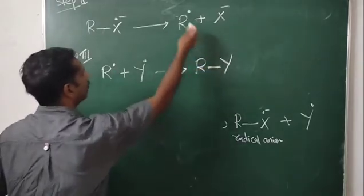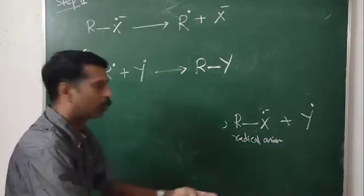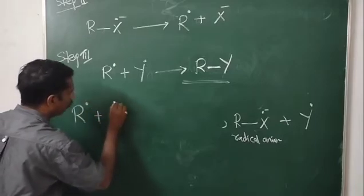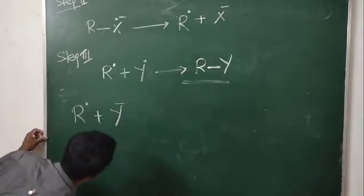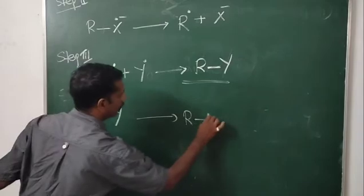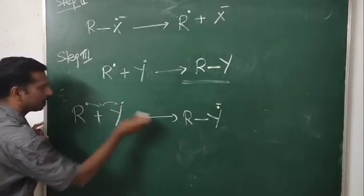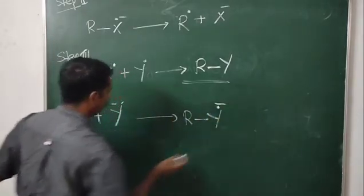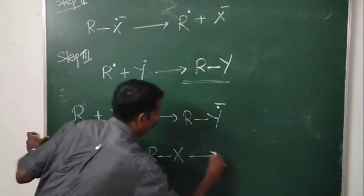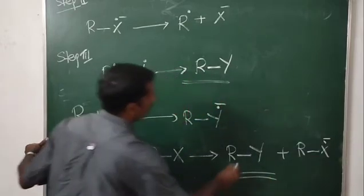Alternatively, this R free radical can combine with the original nucleophile, Y minus. Y minus carries a pair of electrons; one electron joins with R free radical to give RY with a single electron and a negative charge. This radical anion RY then combines with the substrate RX to give the final product RY plus the radical anion of RX. This way also the reaction can be completed.